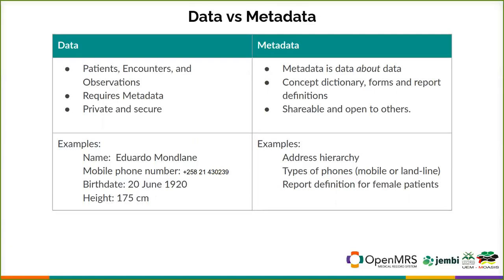Same thing for a phone number. You might define that someone has a mobile phone number — the fact that somebody has a mobile phone number, or even the country code, that's all open and public information. But the actual phone number that could identify a person is data. Same thing with birth dates, or any kind of clinical information like height, HIV status, or what your last COVID test was. Those are examples of data.